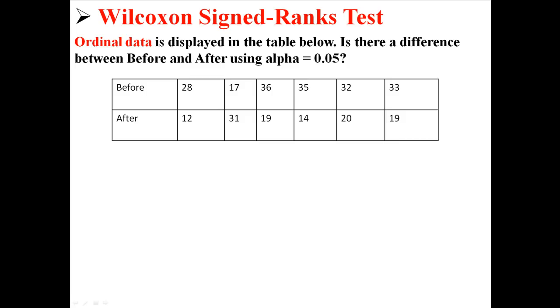So here's some ordinal data displayed in a table. I'm asking is there a difference between before and after using an alpha level of 0.05?